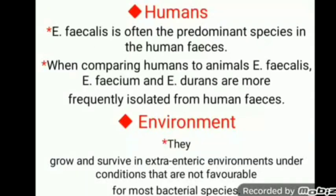In the second category of primary sources — humans — Enterococcus faecalis is often the predominant species found in human faeces. When comparing humans to animals, Enterococcus faecalis, Enterococcus faecium, and Enterococcus durans are the most frequent species isolated from human faeces. Human faeces can therefore be considered a good source of these particular Enterococci species.